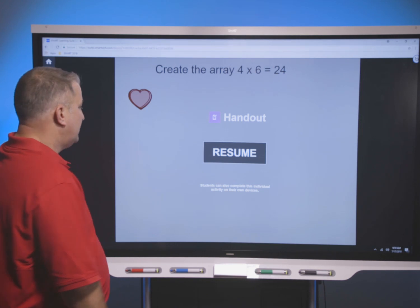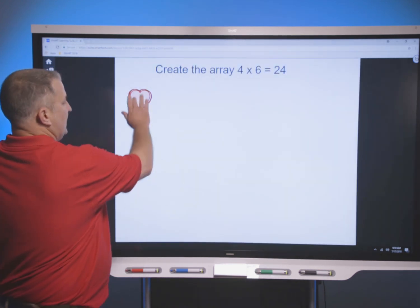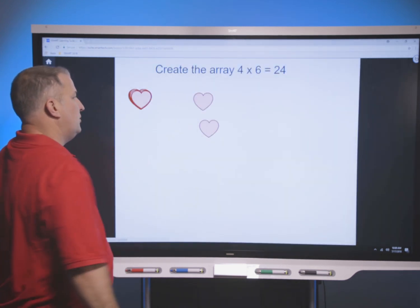Then we have another slide where we would do the same thing but with hearts. We would create a four by six array.